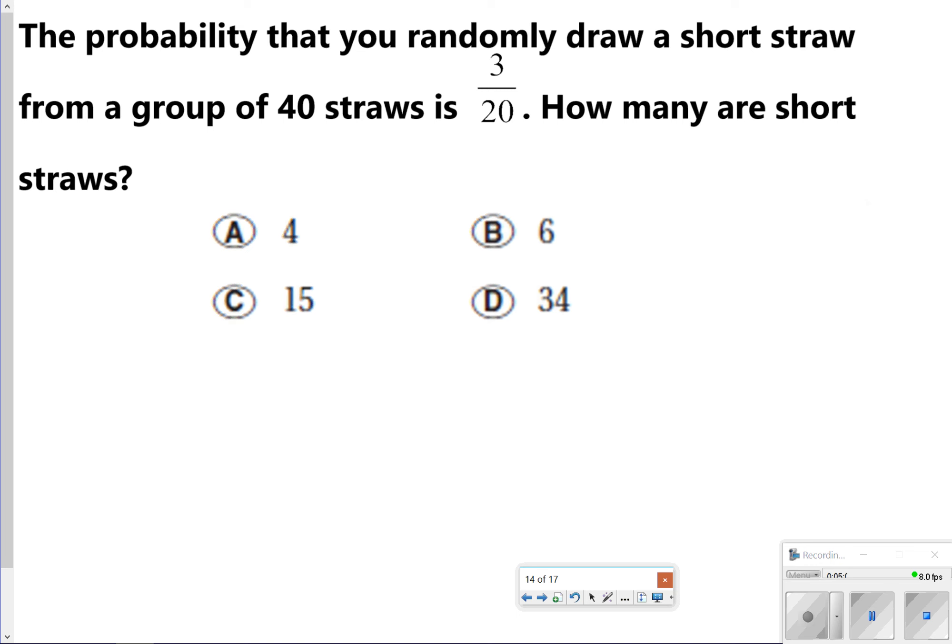The last little bit is when we use probability. So this one is a little bit different, and you're going to have to do some math work here, but it's helpful to write a proportion, and I'm going to show you how to do that right now. The probability that you randomly draw a short straw from a group of 40 straws is 3 20ths. So how many are short straws? If you start with your probability, 3 20ths, and set it equivalent to your total number of straws, x out of 40,